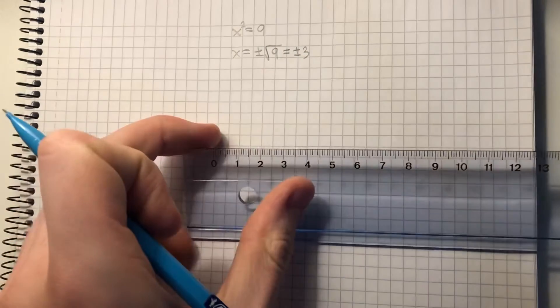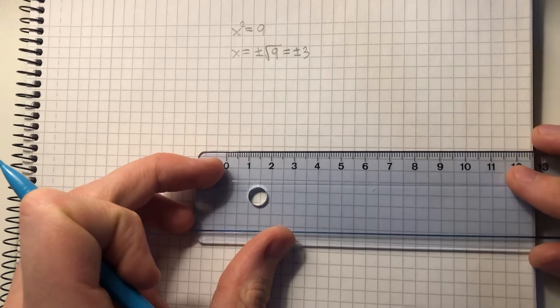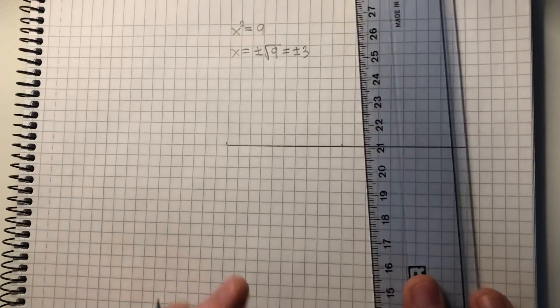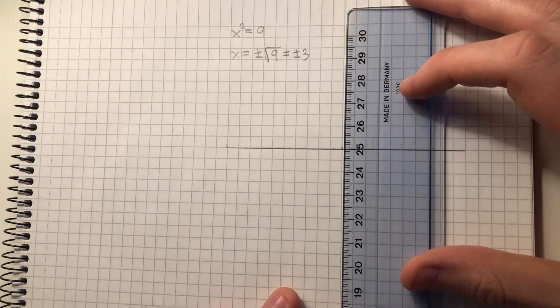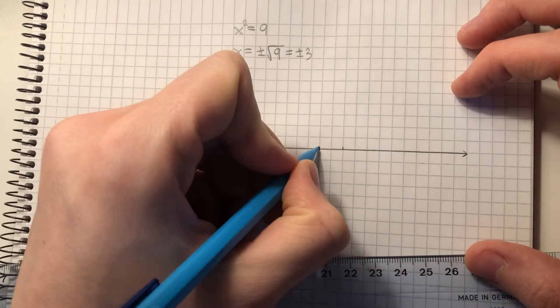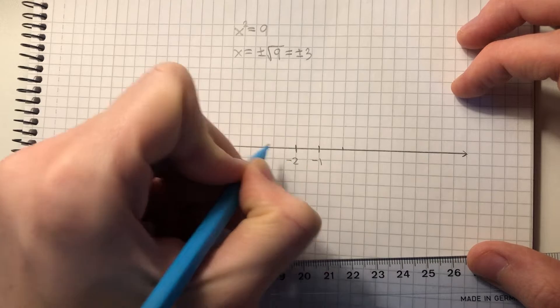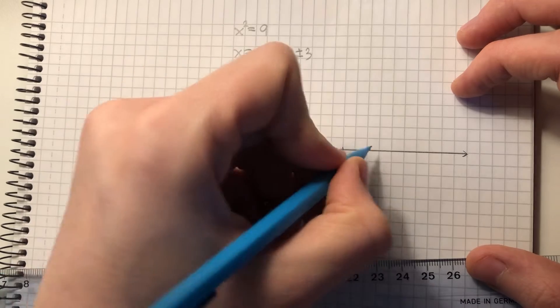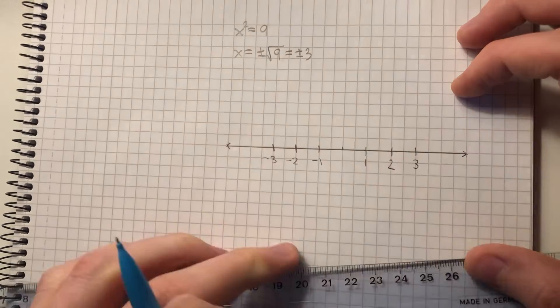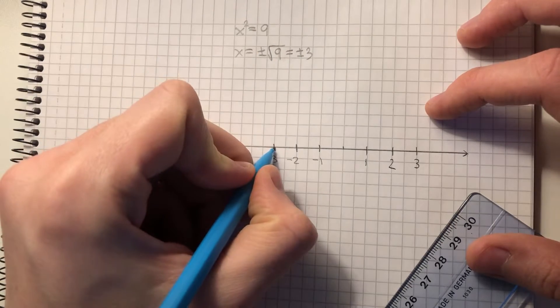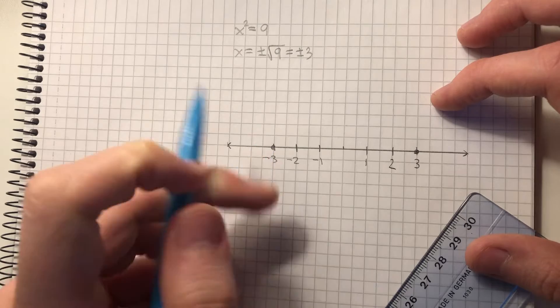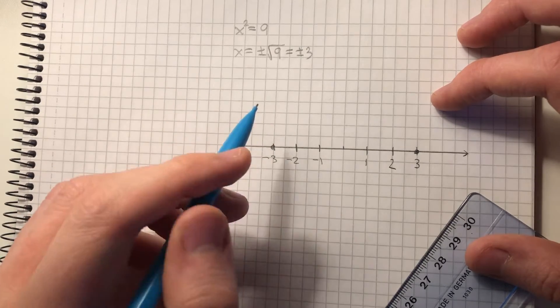Let's draw that up on a number line. So we have minus 3, minus 2, minus 1, 0, 1, 2, 3. This demonstrates the meaning that something times itself yields a positive number.